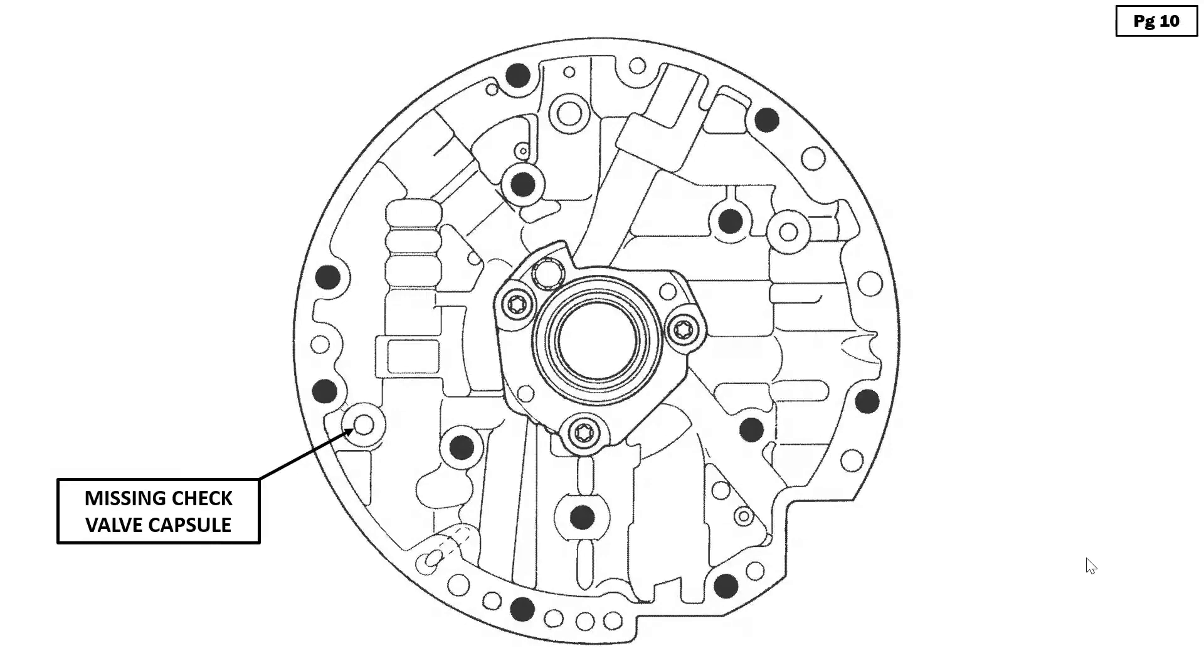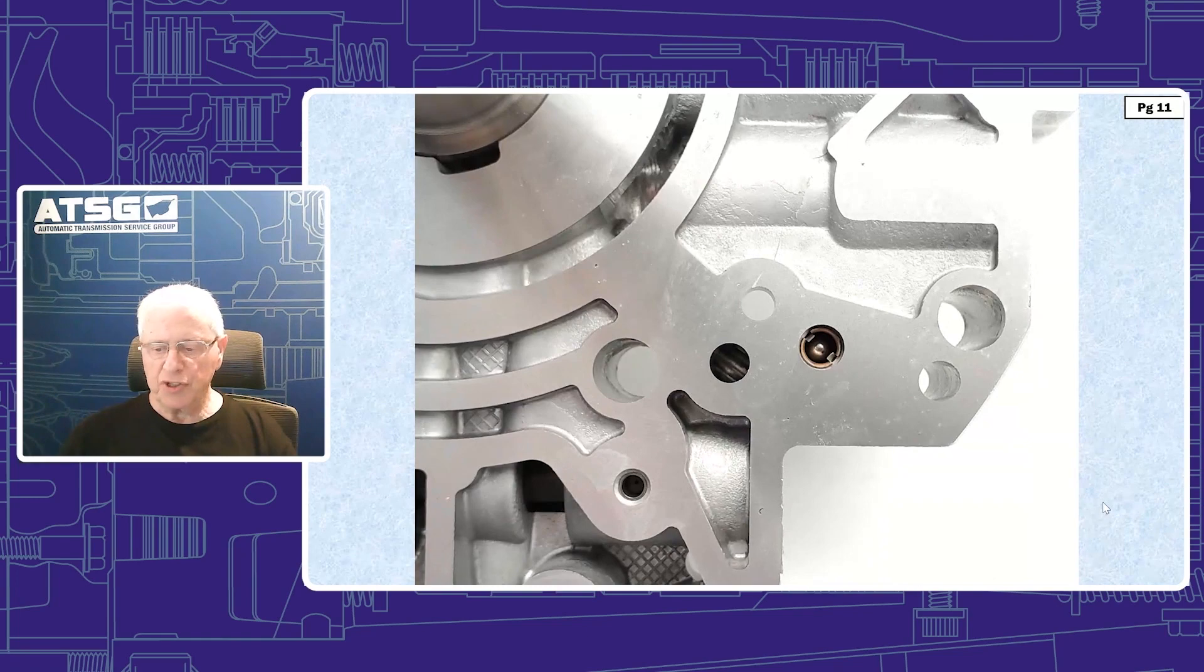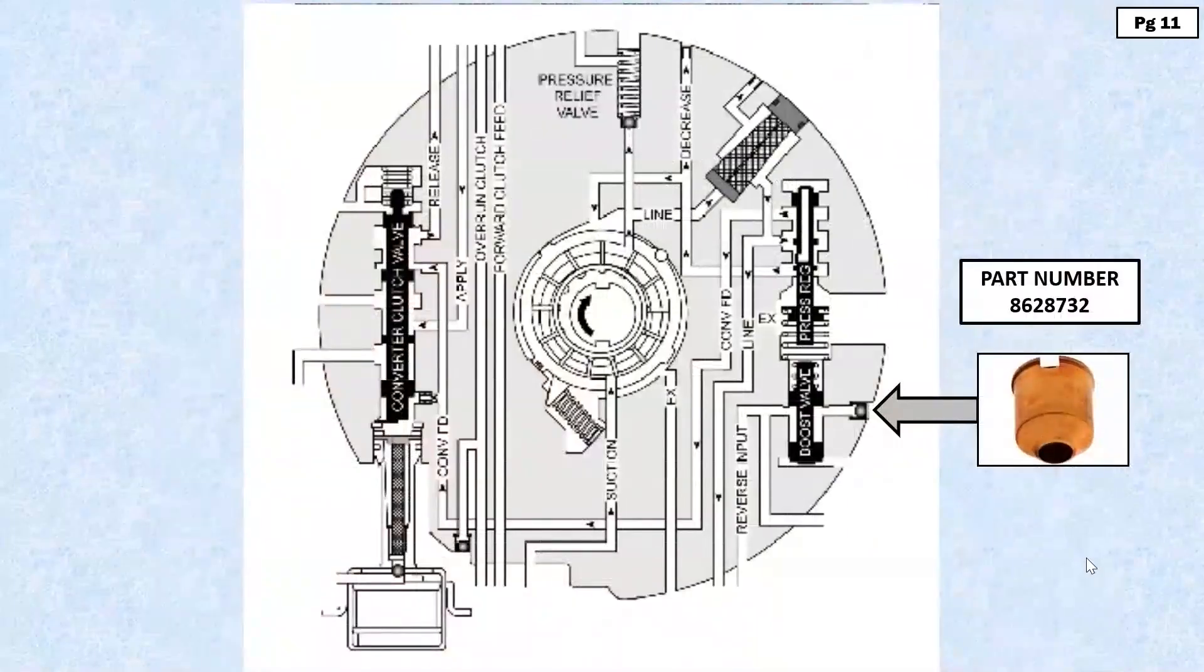So this is the reason why we don't have reverse because this capsule, as you see here, is staked into the pump cover, just as you see on page 11. And that is actually placed in the boost circuit for the reverse input clutch. So being in a reverse boost circuit, obviously if that ball can't seat, we would lose quite a bit of reverse oil and of course consequently we would have none.